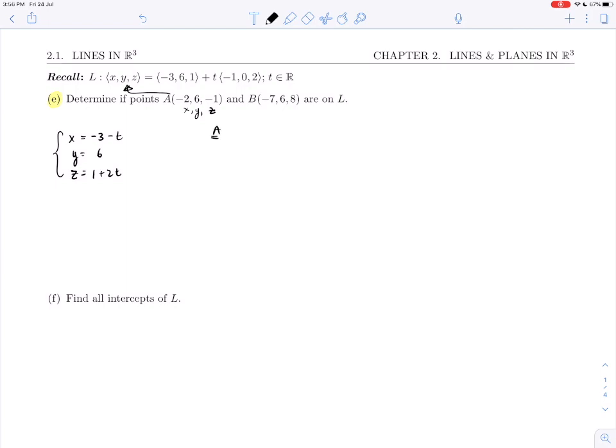Let's start with A. We're going to check whether -2 = -3 - t. Y: 6 = 6, well that one works. And z: -1 = 1 + 2t. What I'm going to do is solve for t in each case and make sure I get the same value of t. If I solve for t here, I get t = -1. If I solve for t here, I also get t = -1. These are the same value of t—there's a single value which makes this system of equations work, which means the system is consistent. The single value of t works for everything, and if the system is consistent, that means our point A is on L.